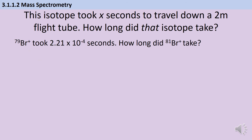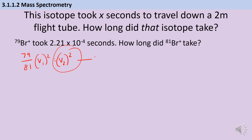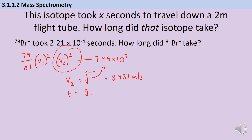For question four: (79/81) × v₁² = v₂². This term has a value of 7.99 × 10⁷. So v₂, once we square root, has a value of 8,937 metres per second. And that gives us a time of flight of 2.24 × 10⁻⁴ seconds.